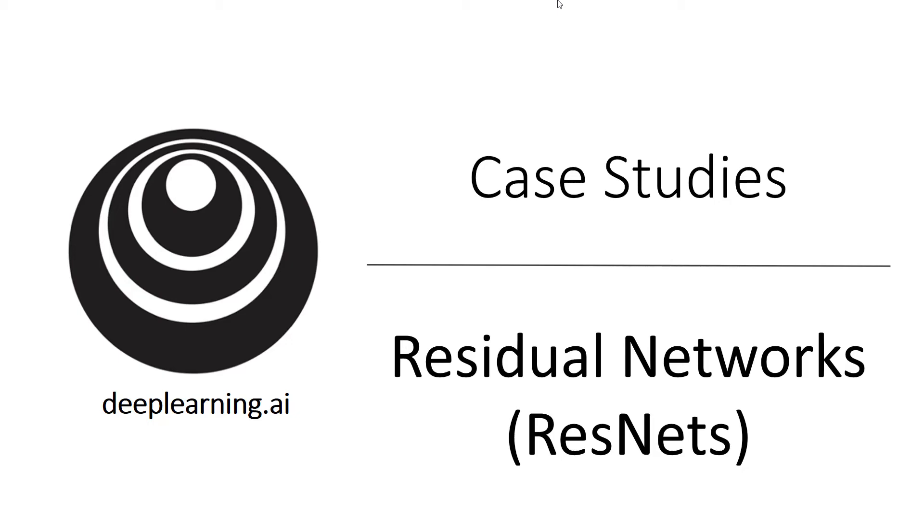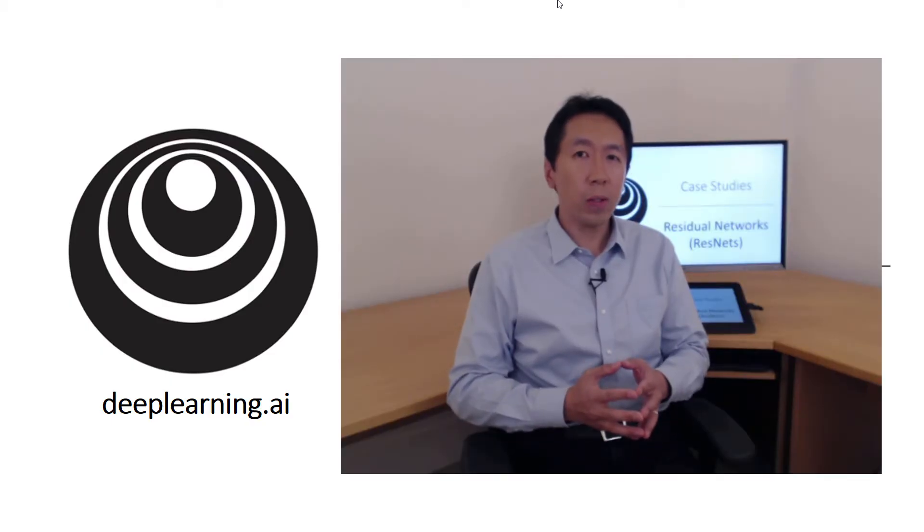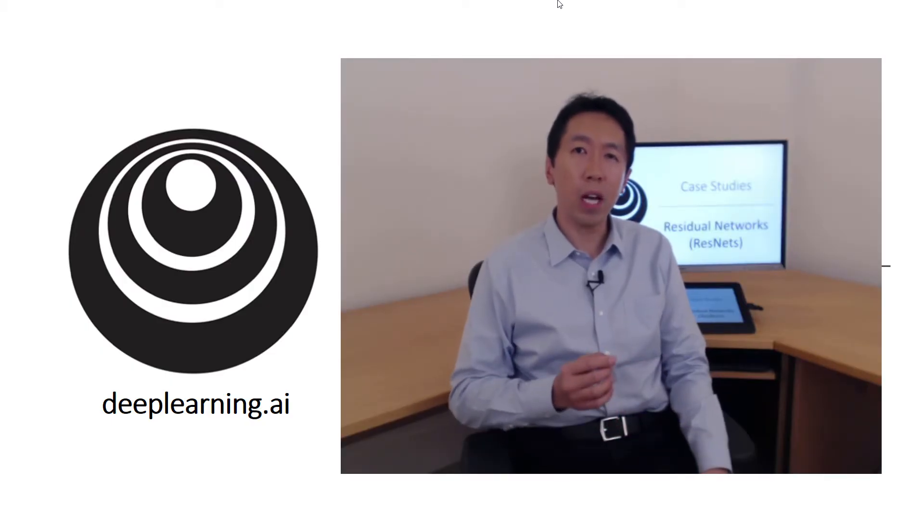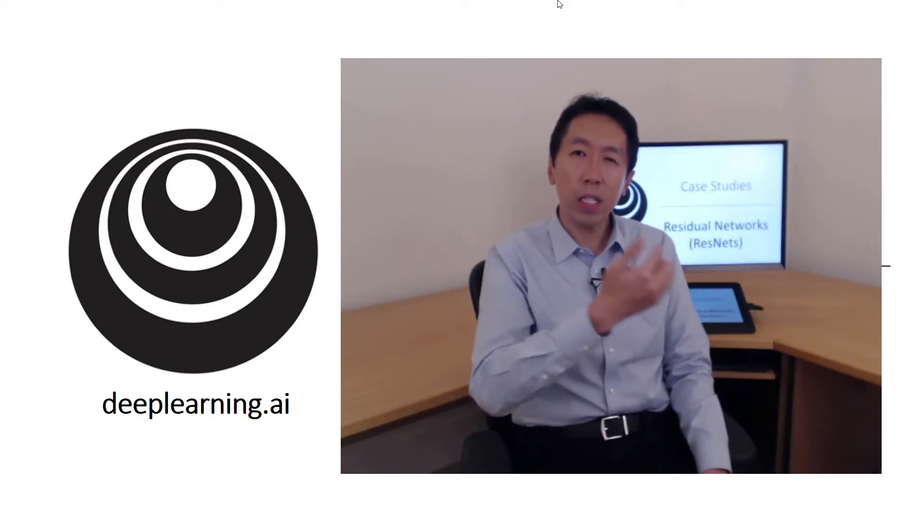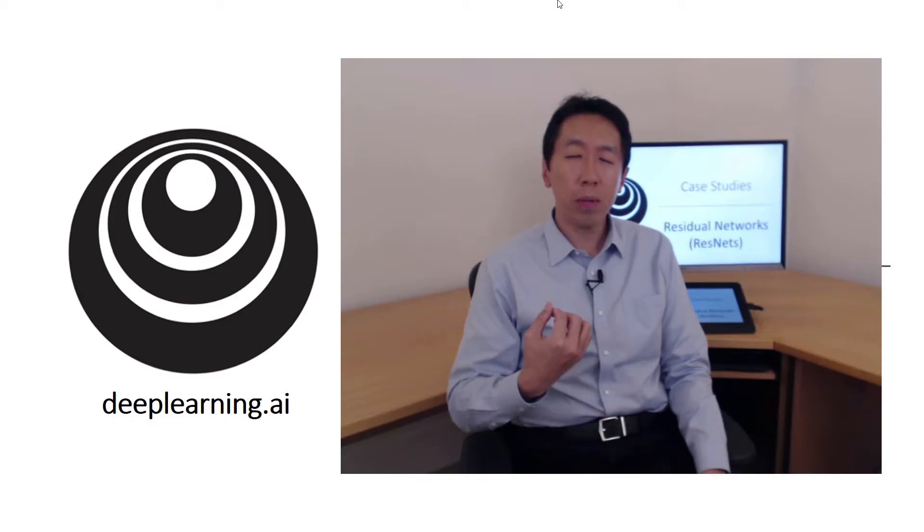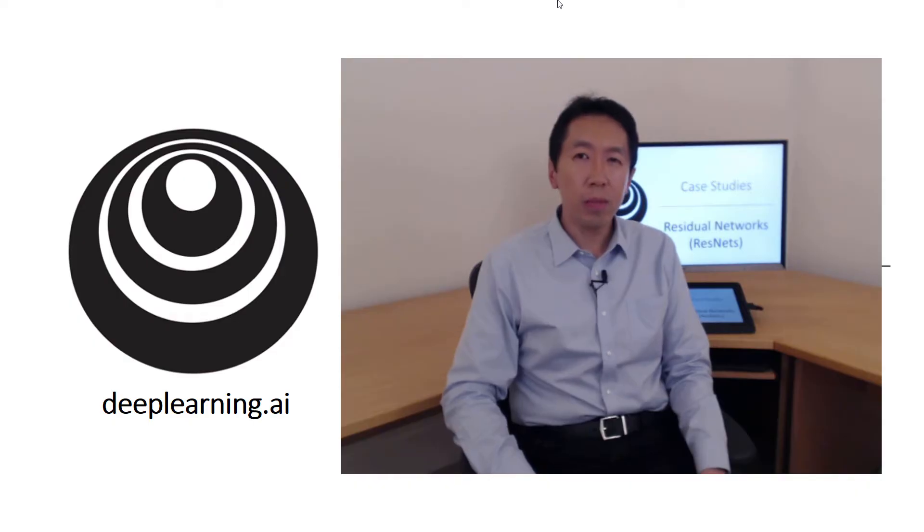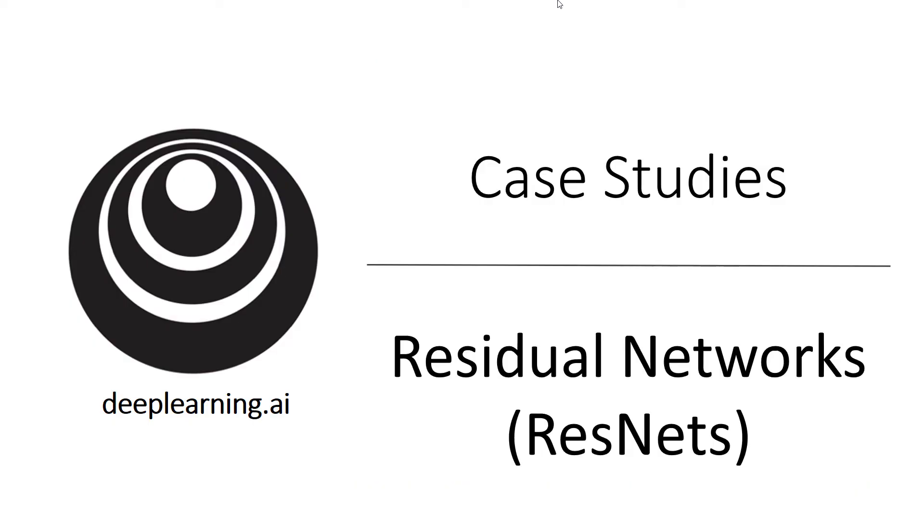Very deep neural networks are difficult to train because of vanishing and exploding gradient problems. In this video, you learn about skip connections, which allows you to take the activation from one layer and suddenly feed it to another layer even much deeper in the neural network. And using that, you will build ResNets, which enables you to train very deep networks, sometimes even networks of over 100 layers. Let's take a look.